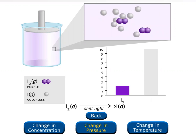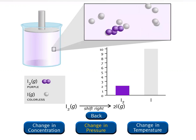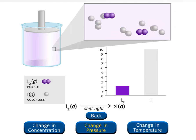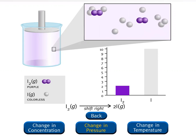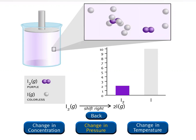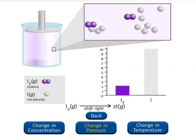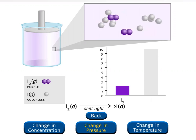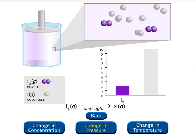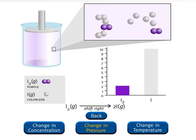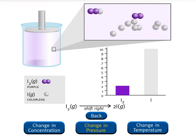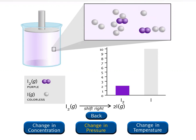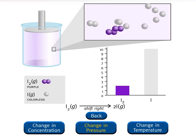As more iodine atoms, which is a colorless gas, are produced, the color of the equilibrium mixture lightens, as you can see in the macroscopic view. Note that the total number of gas particles has increased from 10 to 12.